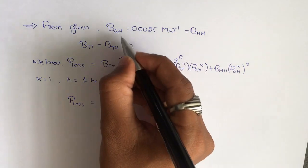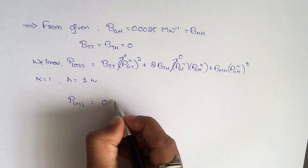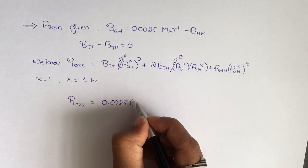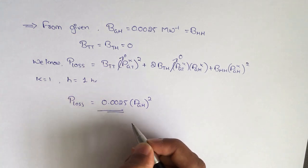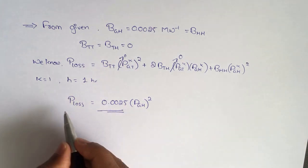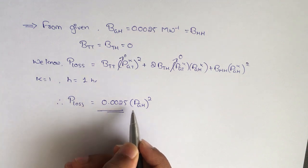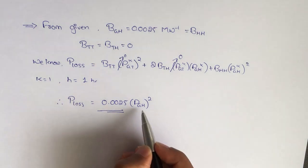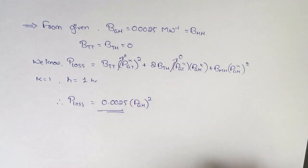The value of B_GH is 0.0025, so P_loss = 0.0025·P_GH². This is our first expression. We still don't have the exact value of P_loss — we will get that after determining P_GH. Let's move on.